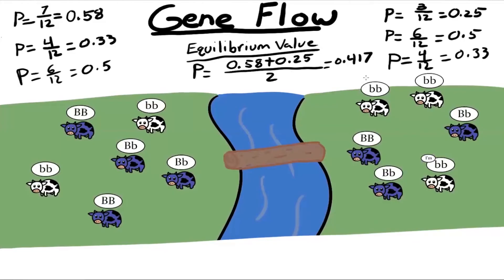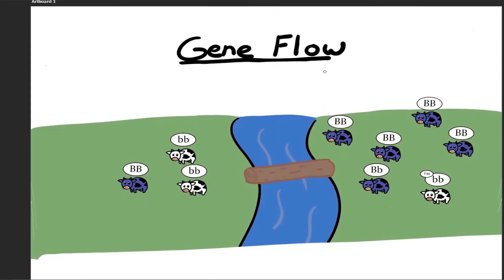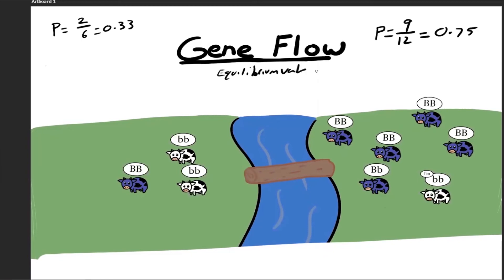Now let's see what happens when we don't have even numbers of cows in each population. We'll have a small population and a large population, with only one cow migrating at a time between them. Before any migration, on the left side we have two alleles out of six, giving an allele frequency of 0.33. On the right side we have 9 out of 12 dominant alleles, so an allele frequency of 0.75. Since these populations are not even, we can't simply take the average — we have to count the number of alleles. There are 11 dominant alleles out of 18 total, so our equilibrium value is 0.611.